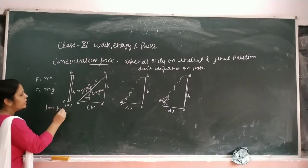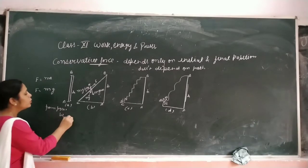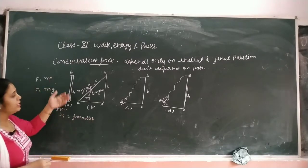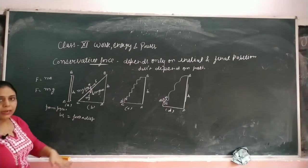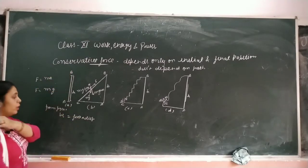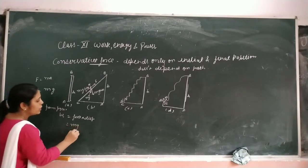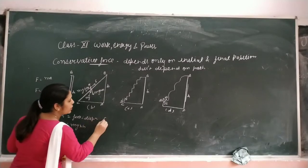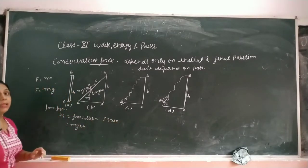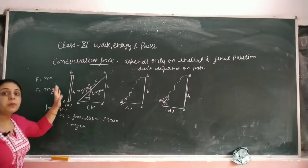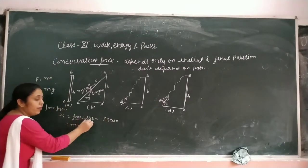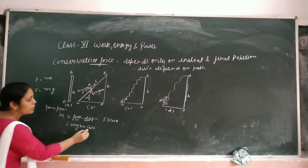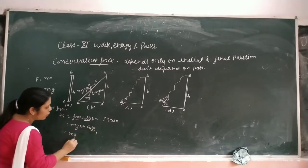Height is H. From figure 1, work done W1 = force into displacement. We are moving upward against gravitational force. Force = MG, displacement = H. Force and displacement are in the same direction, so theta = 0, cos 0 = 1. Therefore W1 = MGH.